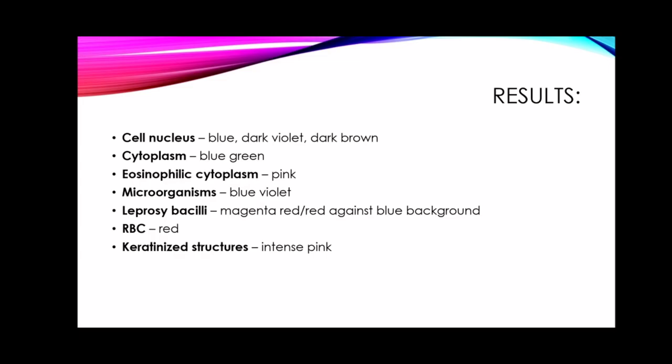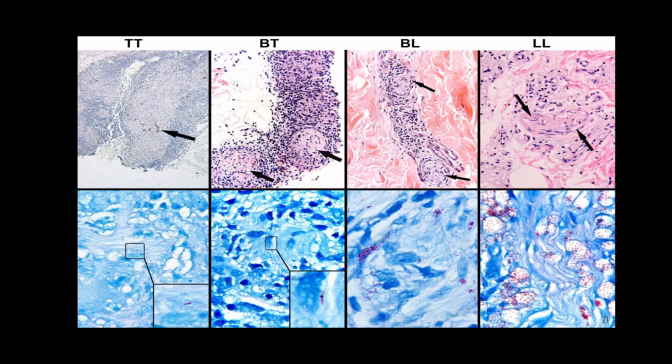If there are red blood cells found on your slide, then they will be colored red. The keratinized structures — the skin and the hair — will color intense pink. There are different types of leprosy: we have the tuberculoid type and the lepromatous type.